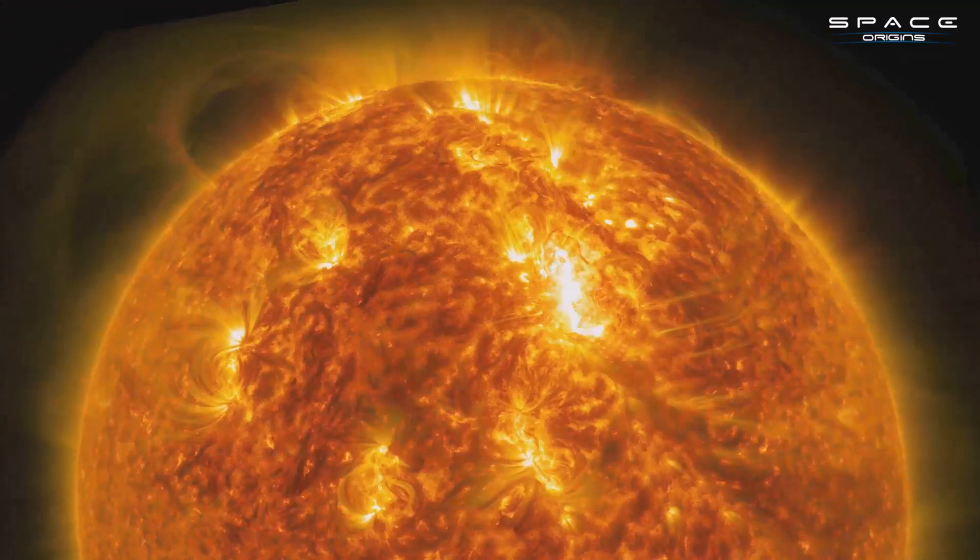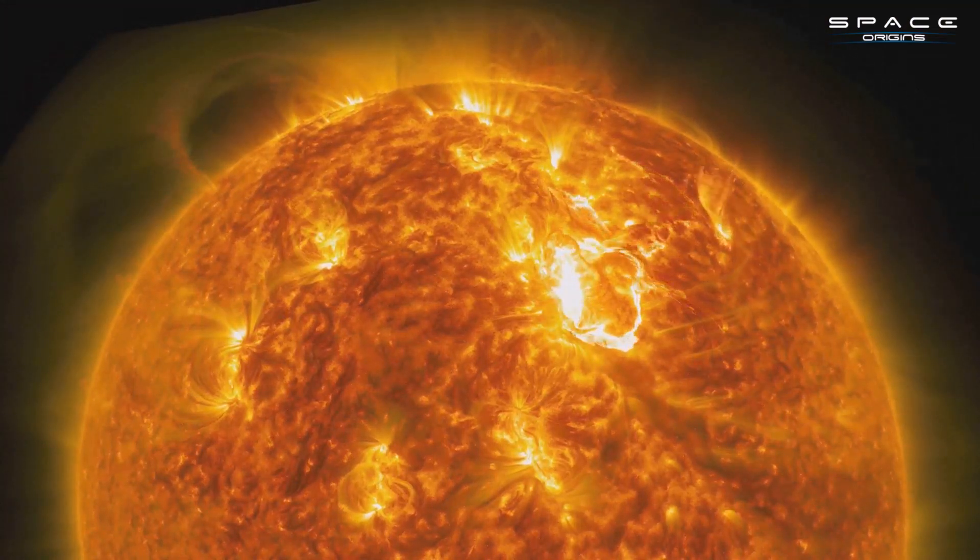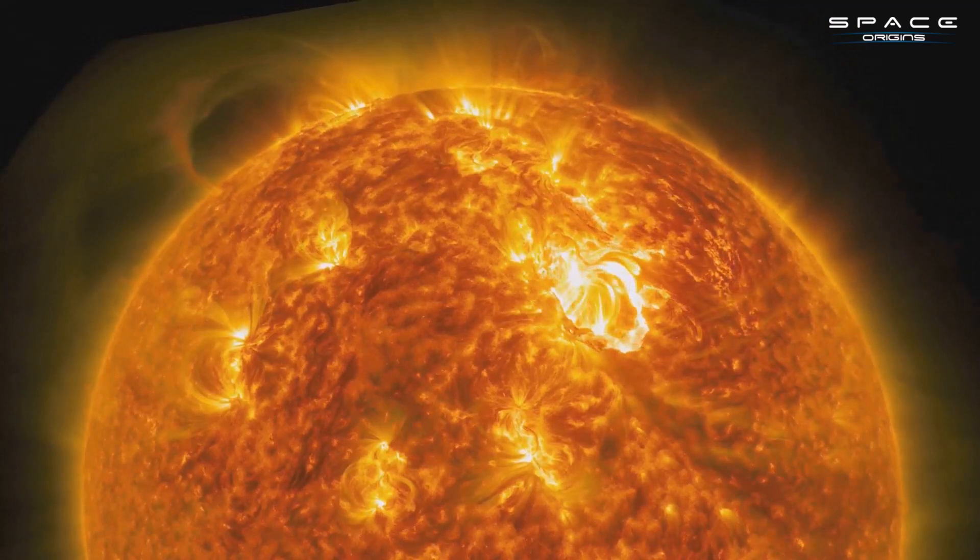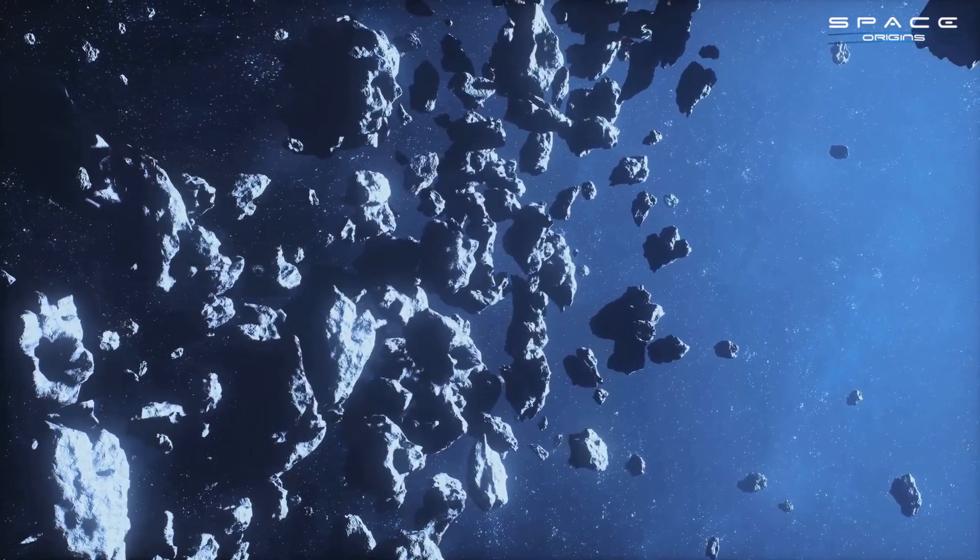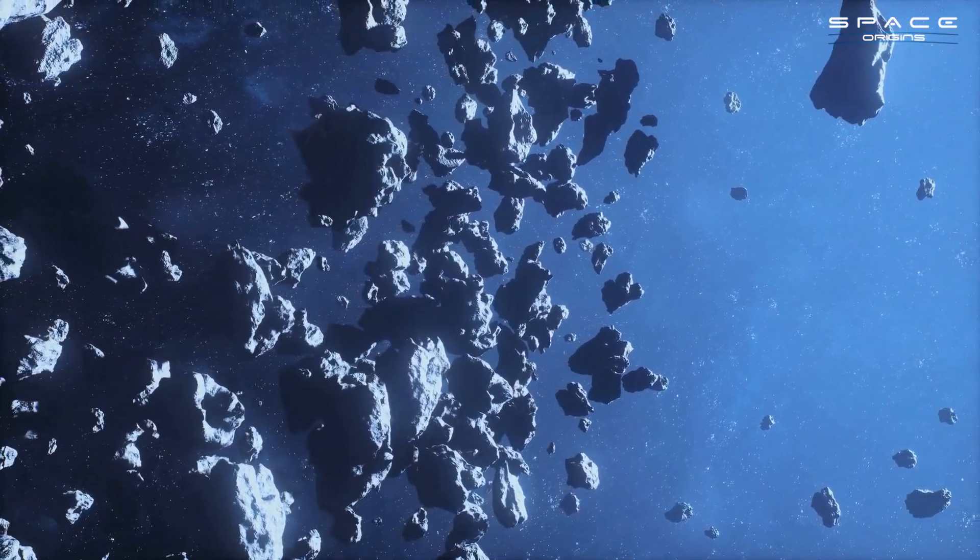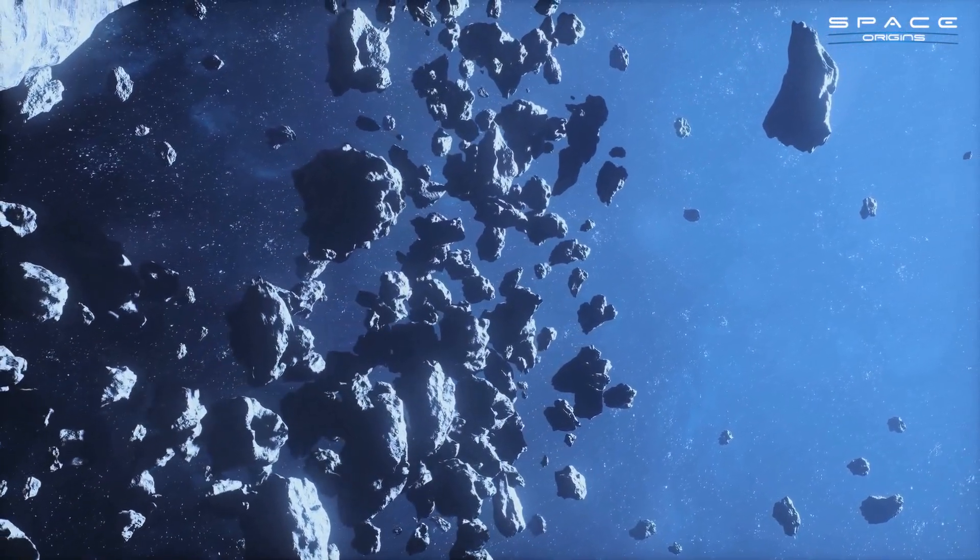This sunward region creates a significant blind spot for our ground-based telescopes, rendering many near-Earth asteroids undetectable. We've identified over 33,000 of these celestial objects, but thousands more may still be lurking unseen in the sun's glare.